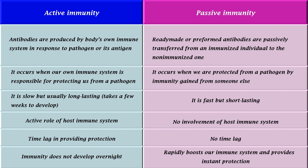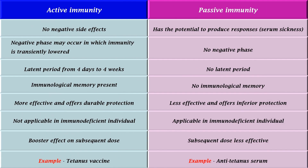In active immunity, there is an active role of the host immune system and there is a time lag in providing protection, whereas in passive immunity, there is no involvement of the host immune system and there is no time lag in providing protection. Active immunity does not develop overnight, but passive immunity rapidly boosts the immune system and provides instant protection. The latent period is from 4 days to 4 weeks in active immunity, while there is no latent period in passive immunity.